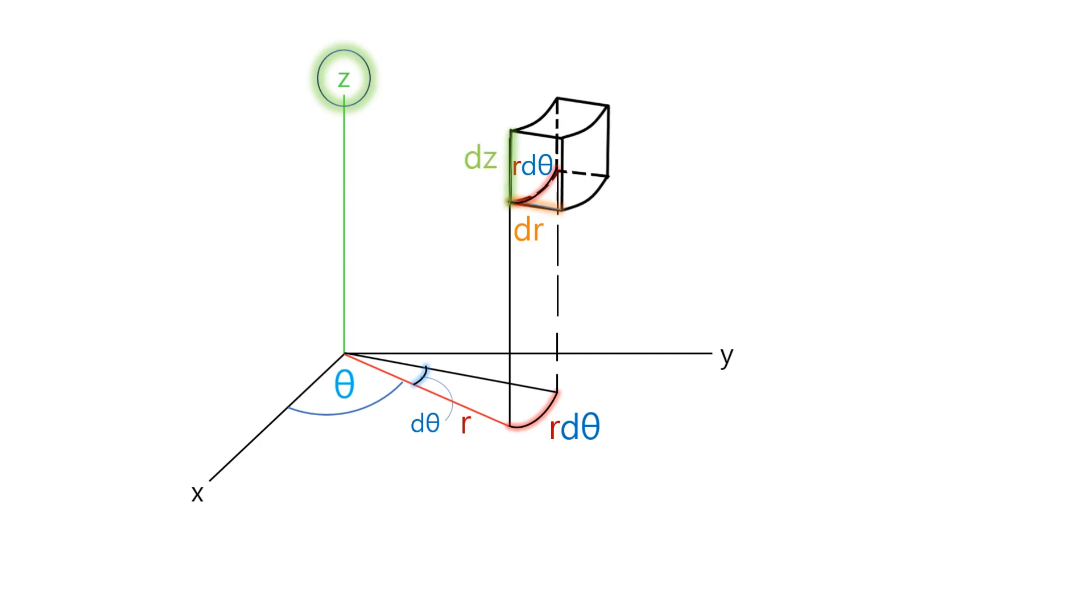Finally, we could express the size of minute volume. The size of the minute volume is dV = R d theta dr dz.